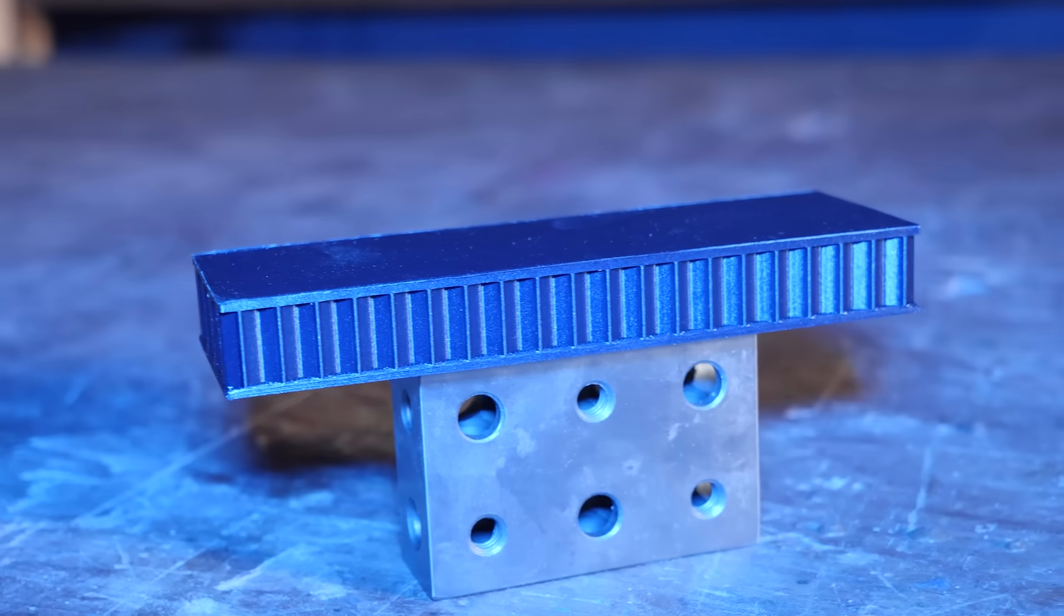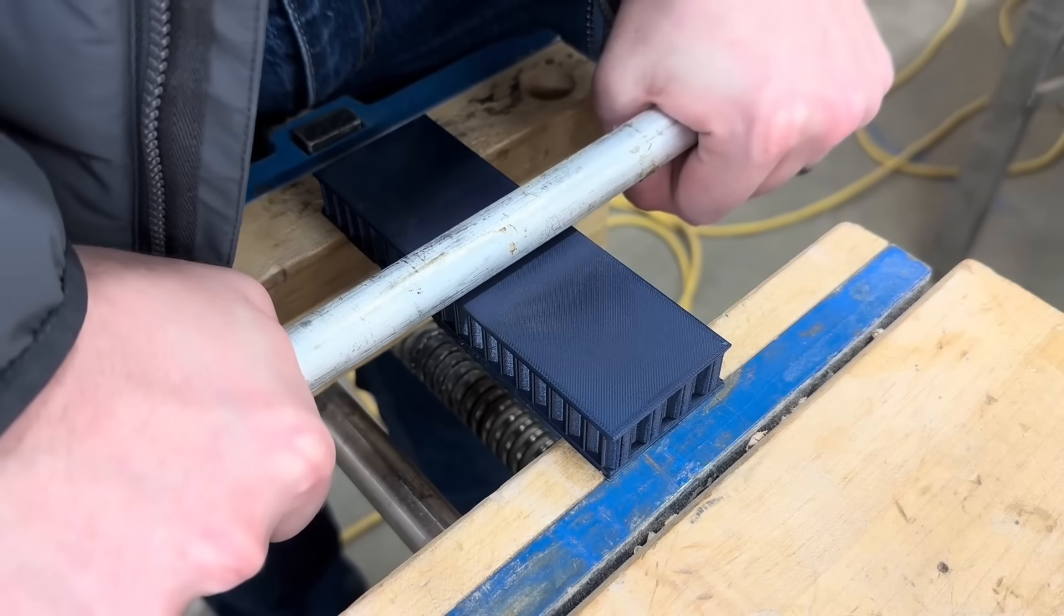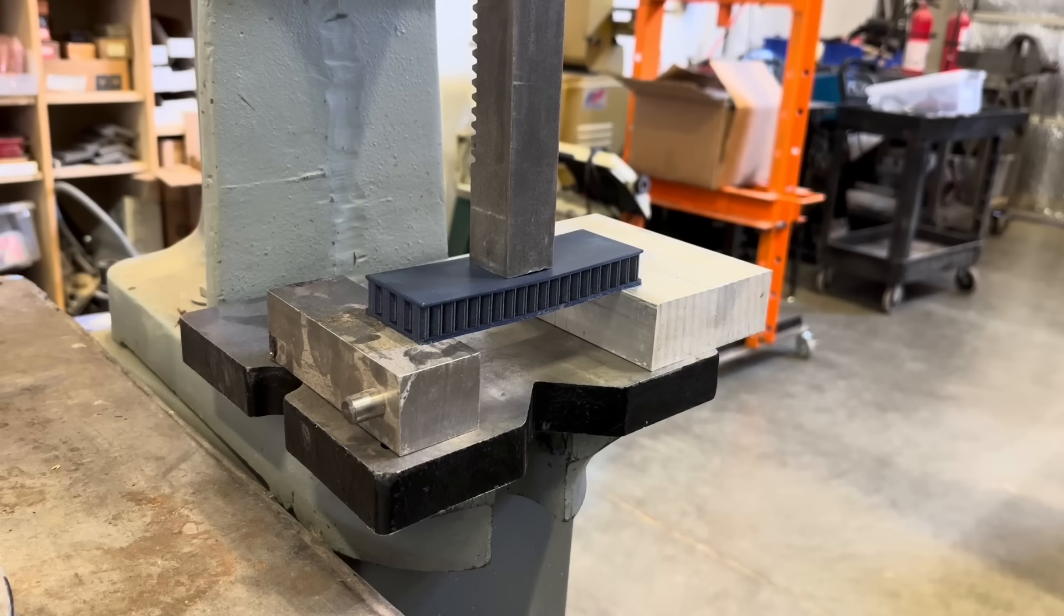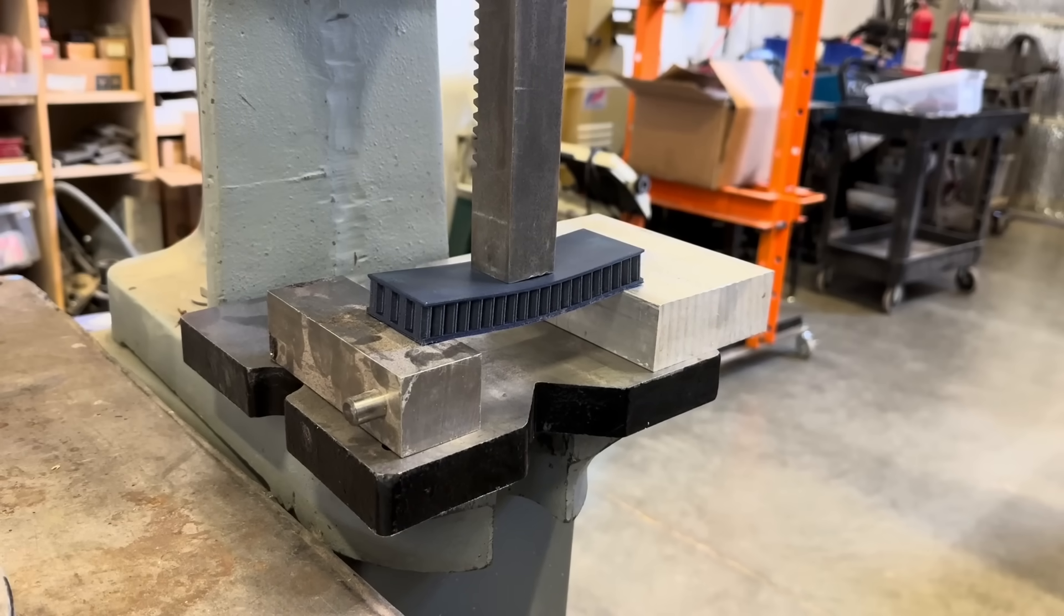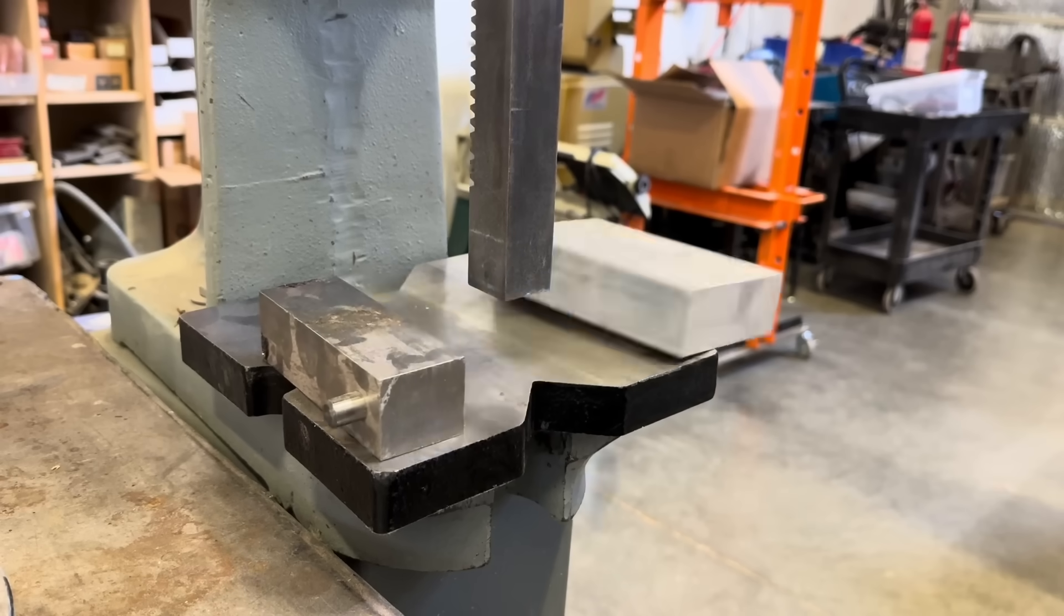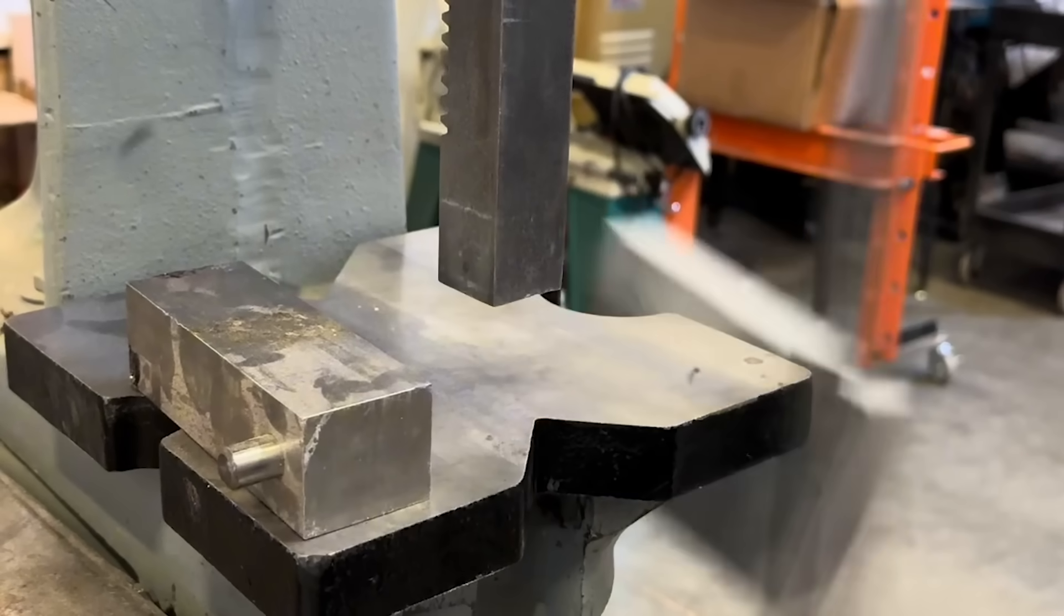To make sure this would work, I printed a test version of the standard honeycomb infill out of PETG. At first, I tried to break this with my body weight, but it was extremely strong, so I took it to the metal shop and crushed it with an arbor press. I didn't have a scale, but this was a lot of force, and you can see when it breaks, it disappears in a single frame, less than a 30th of a second, which is insane.